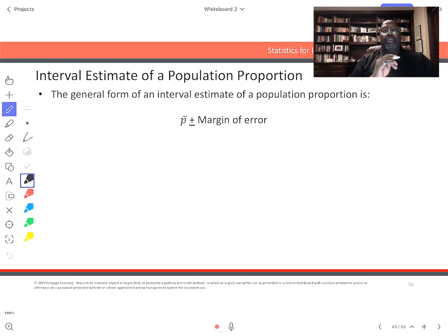In this short video we're going to focus on interval estimation of a population proportion. Much like the case of the population mean where we had a point estimate plus a margin of error, we have a point estimate plus or minus a margin of error as well.